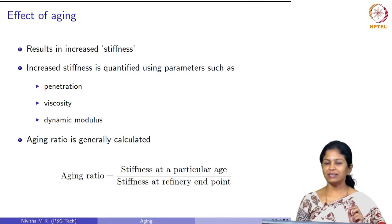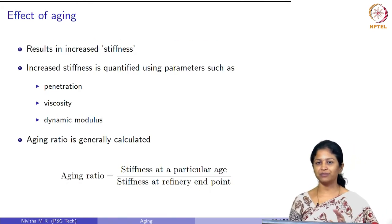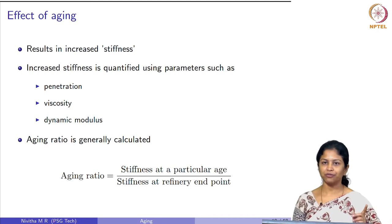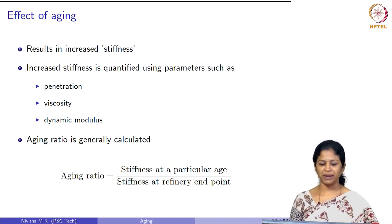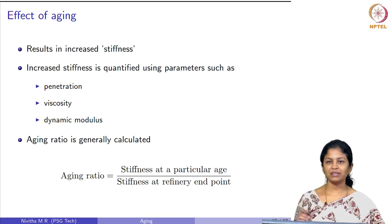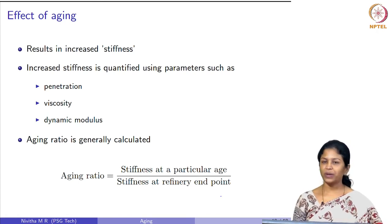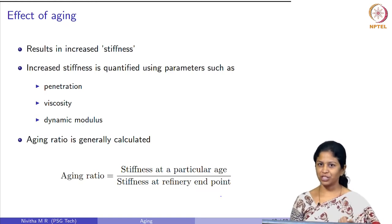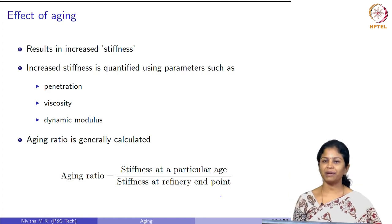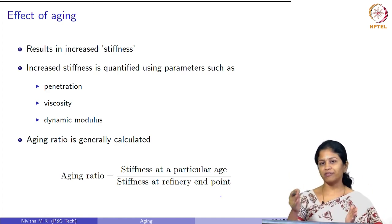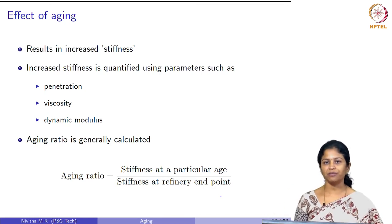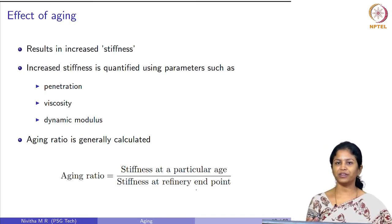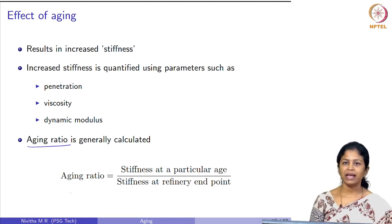Now let us see the effect of aging. Aging causes an increase in stiffness — it causes hardening of the material. This increase in stiffness is quantified using different parameters. We can measure penetration before and after aging, or we can measure viscosity or dynamic modulus, and quantify the effect of aging. To quantify the effect of aging, people generally calculate something called an aging ratio.